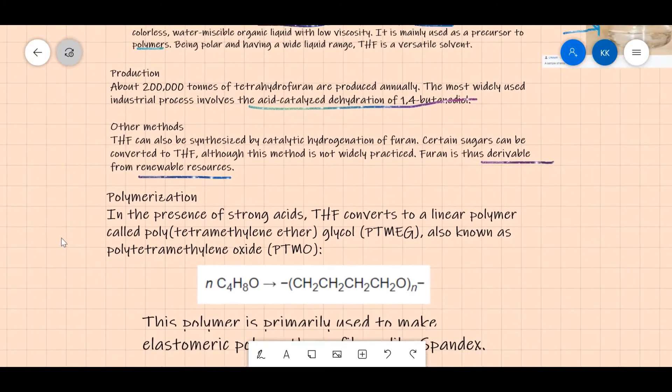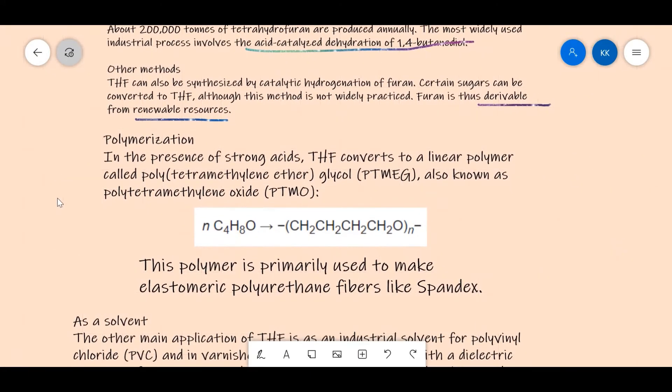Now let's look at polymerization reactions, which is the use of tetrahydrofuran. In the presence of strong acids, THF converts to a linear polymer called poly(tetramethylene ether glycol), or abbreviated as PTMEG, also known as poly(tetramethylene oxide), or PTMO. You can look at the reaction right here.